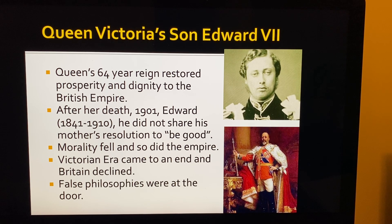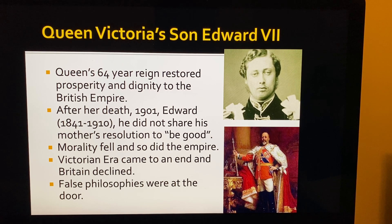The Victorian era came to an end, and Britain started to decline. It declined mainly because of the false philosophies that were at the door — the signs of the times at that time. Now we have false philosophies trying to take over from the blessings of true Christianity.